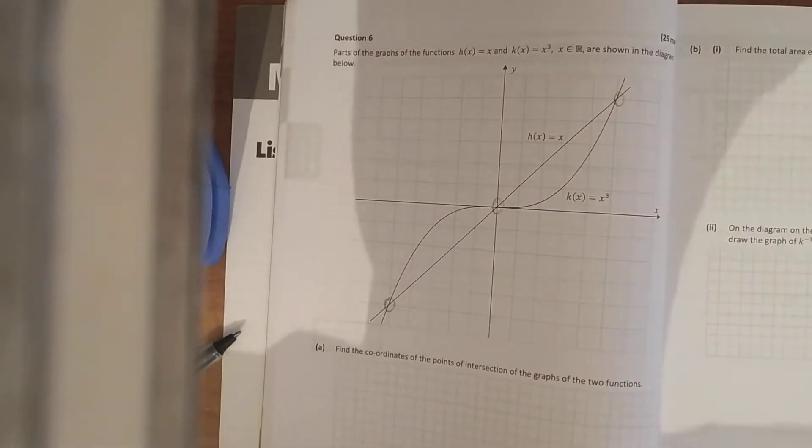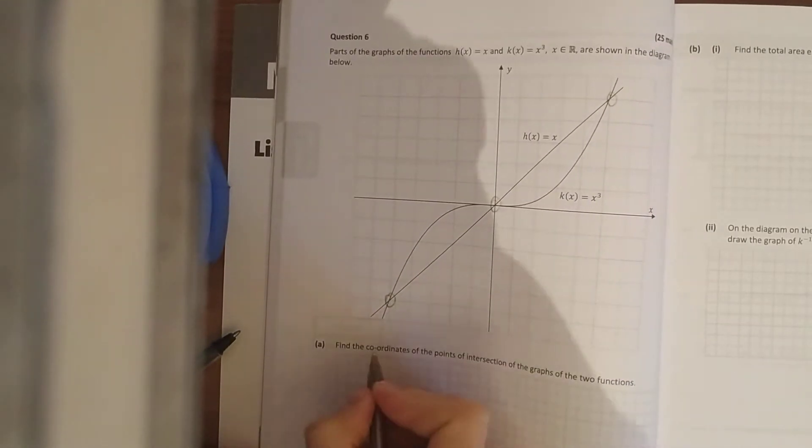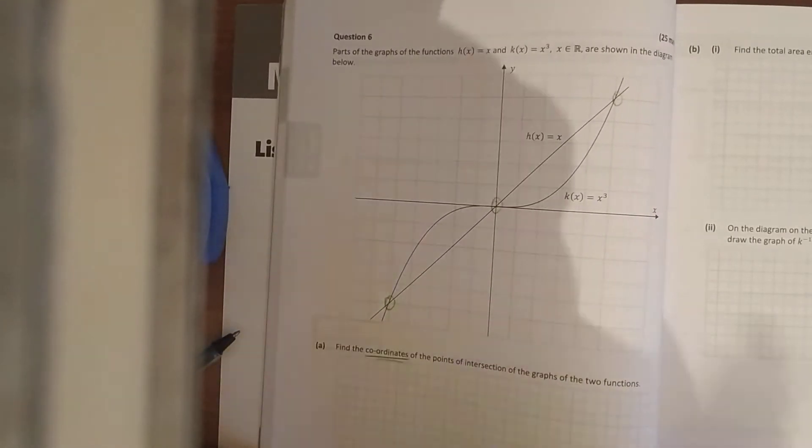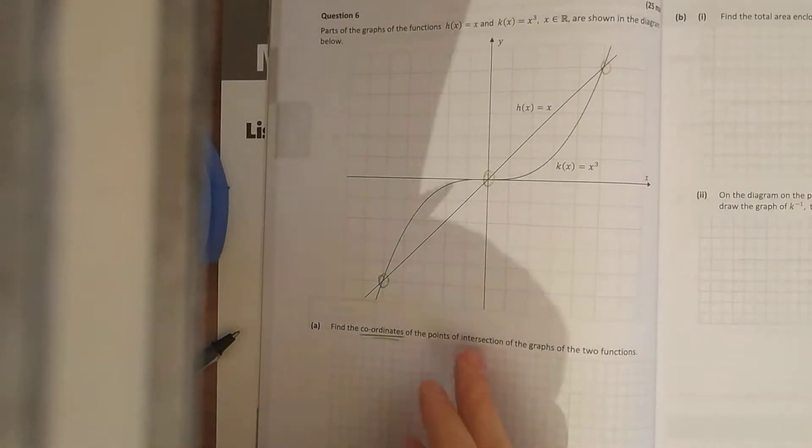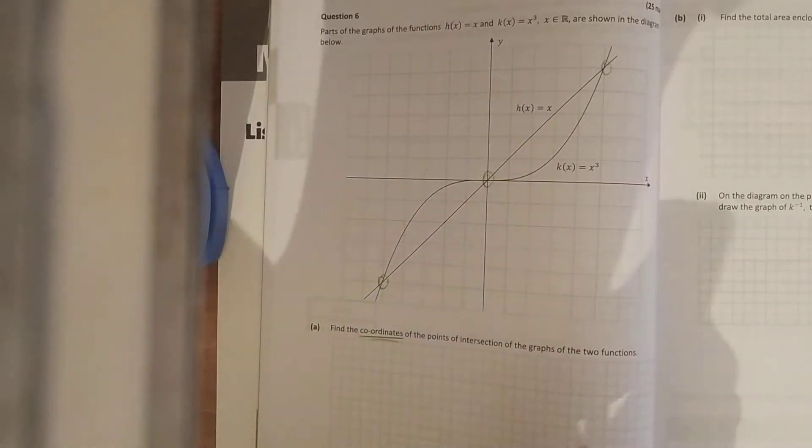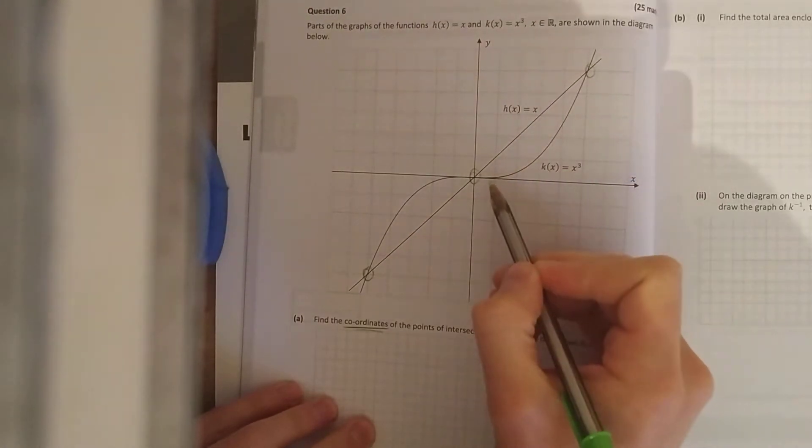The first part of the equation: find the coordinates of the point of intersection. So the coordinates mean your x and your y, so it's going to be like (2,1), (3,6), whatever. Of the intersection of the graphs of the two functions, so what are they asking you? Where are them two graphs equal? Where are they the same?